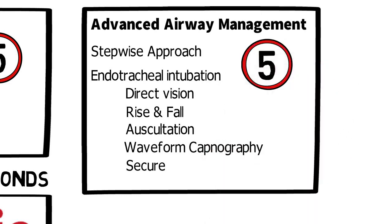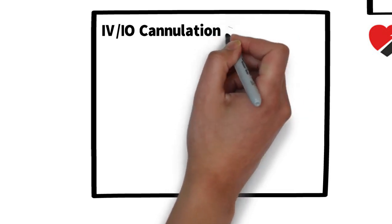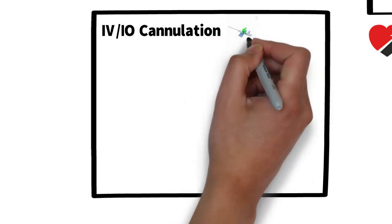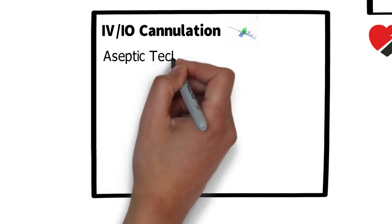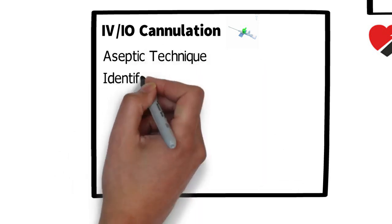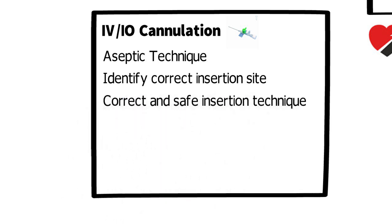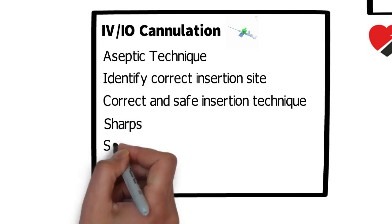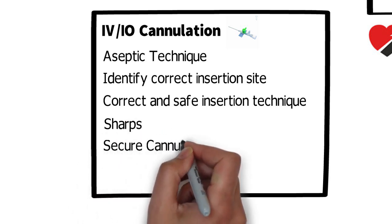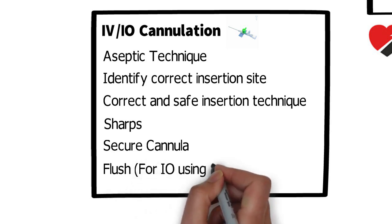For IV or IO cannulation, it's important to note that gaining rapid vascular access in children is often quickest using an intraosseous needle, so this should be used in preference to an IV cannula unless a suitable IV site is immediately apparent. Key things we're looking for include aseptic technique, correct insertion site, correct and safe insertion technique using the EZ-IO, sharp safety and disposal, securing the IO cannula, and a flush using a three-way tap.